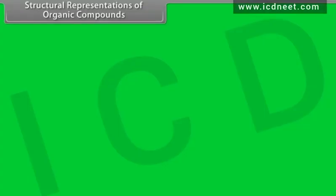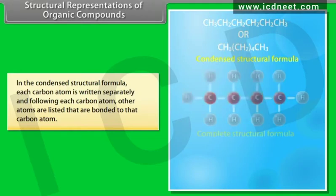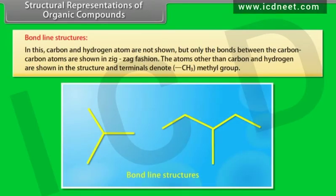In the condensed structural formula, each carbon atom is written separately and following each carbon atom, other atoms bonded to that carbon are listed. In bond line structures, carbon and hydrogen atoms are not shown, but only the bonds between carbon-carbon atoms are shown in a zigzag fashion.